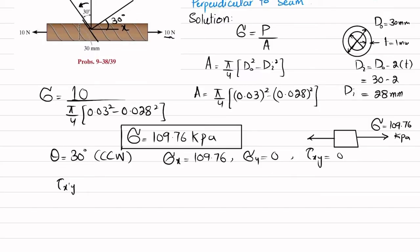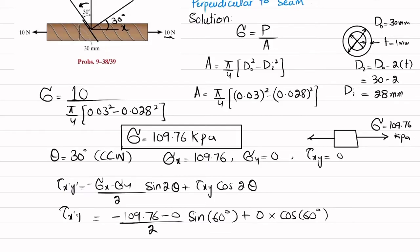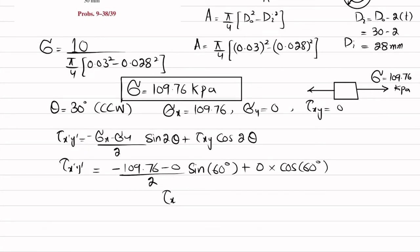Using the stress transformation formula: tau x'y' equals negative (sigma x minus sigma y) divided by 2, times sine of 2-theta, plus tau xy times cosine of 2-theta. Substituting: negative (109.76 minus 0) divided by 2, times sine of 60 degrees, plus 0 times cosine of 60 degrees. When you calculate this, tau x'y' comes out to be minus 47.5 kPa.